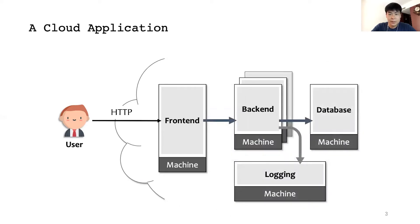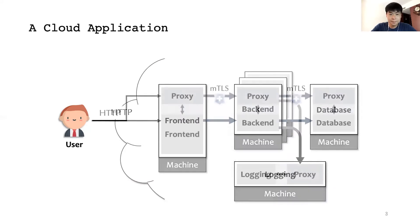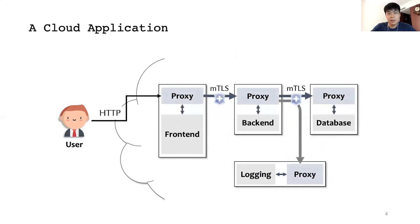The microservice architecture aims to solve this problem. It splits a large, complex application into multiple microservices according to its business boundaries. Each of them can be independently developed, deployed, and upgraded, thereby significantly improving the flexibility of software development and maintenance. In order to efficiently manage the communications between microservices, Service Mesh emerges as a dedicated communication infrastructure layer. It uses proxies to manage all network traffic among microservices, and transparently adds features like access control, traffic management, and monitoring.